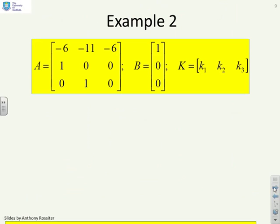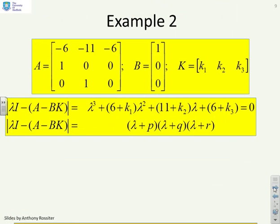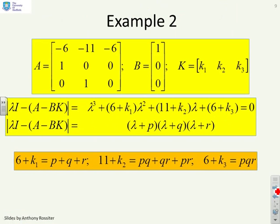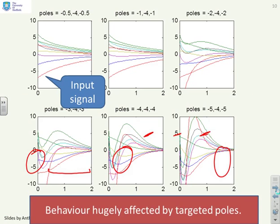Second example. Here, this is three by three. And again, the algebra is shown here to demonstrate that I can choose my closed loop poles, minus P, minus Q, minus R, wherever I like. And no matter where I choose them, I can find the corresponding parameters for my state feedback so that I get those poles. That's a standard canonical approach.